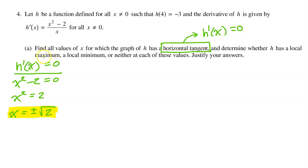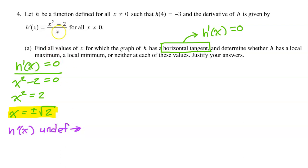However, in order to determine whether h has a local maximum or a local minimum at these values, we need to make a sign chart. In order to make a sign chart, we need all of the critical numbers. These are critical numbers because critical numbers are the values of x that cause h prime to either equal 0 or be undefined. We need to also consider where h prime is undefined — looking at the denominator, h prime is undefined when x equals 0. So we have three critical values to place on a number line.